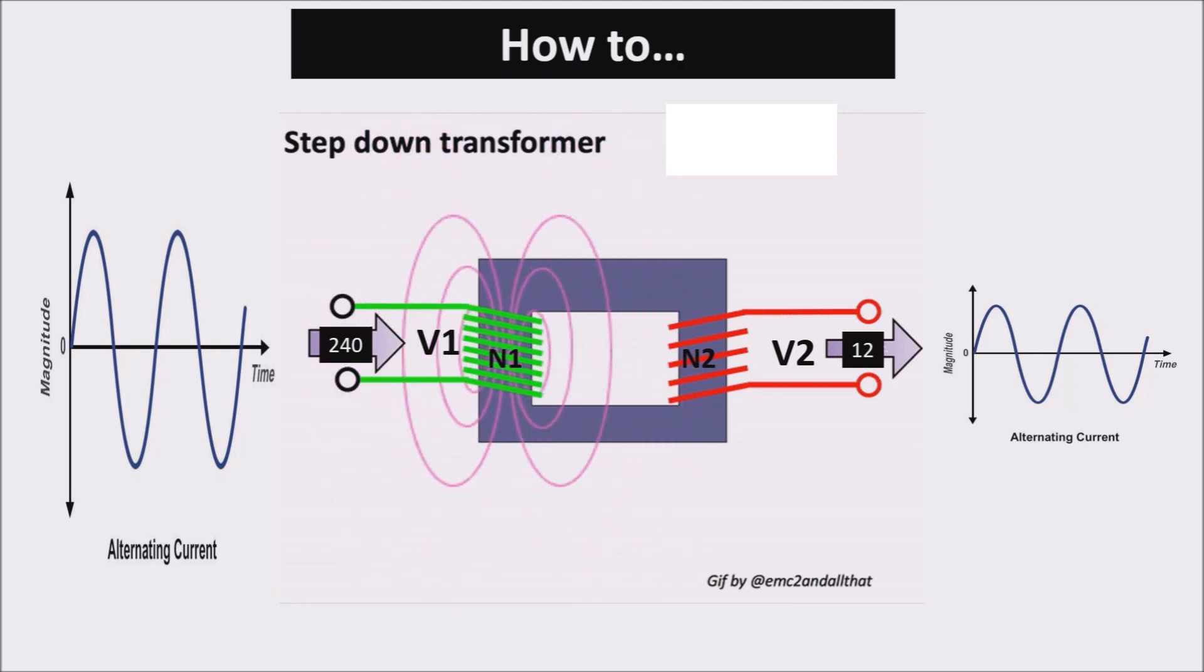So the transformer lowers the voltage level, but we still have an alternating voltage, so we need other components.